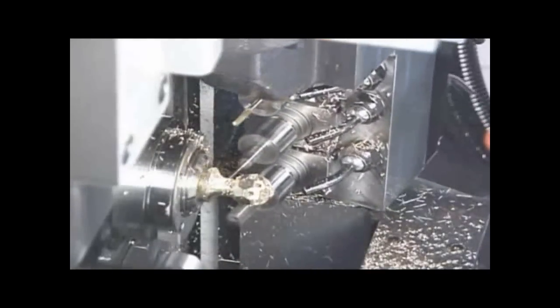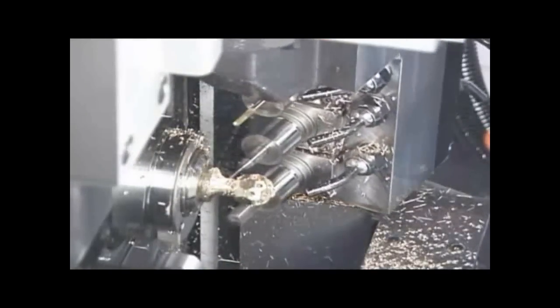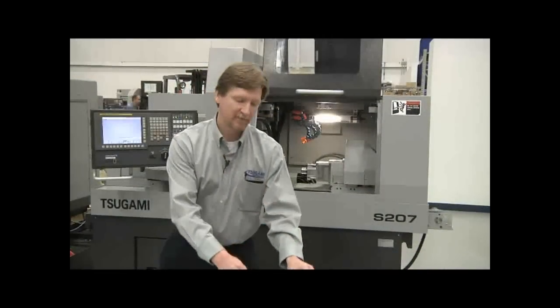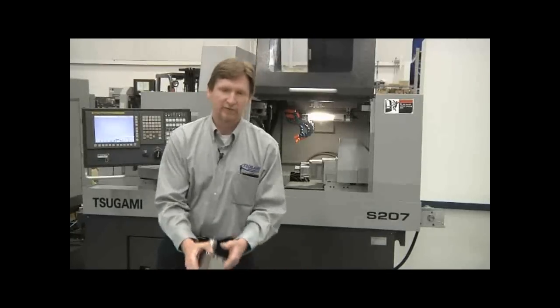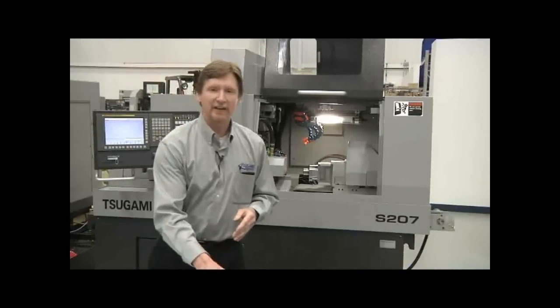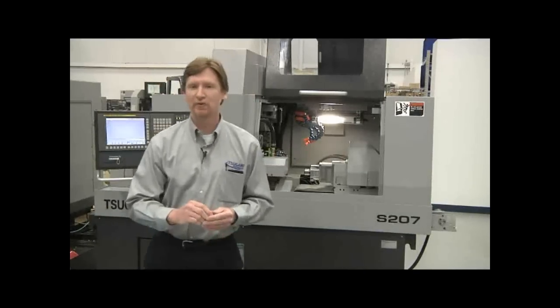The back working arm on the S207 also has modular capability. It allows you to go from face drill attachments to static tooling to cross drill attachments. This gives you a lot of flexibility on how you want to produce your part.